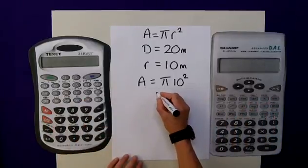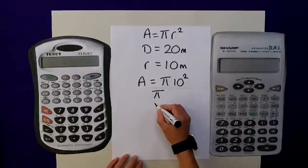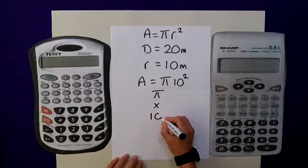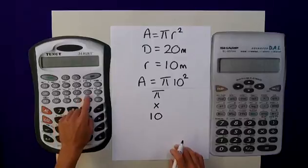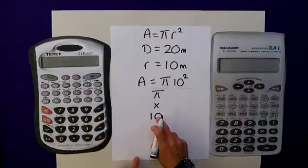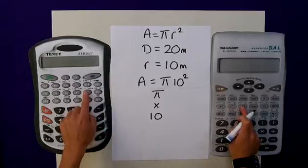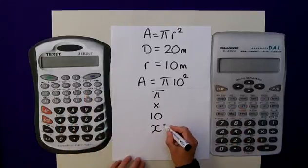I then type in, after my pi, a multiplication of 10, but then I press the x squared button, and that will then square this 10 on both calculators. So that's the button I need to press next.